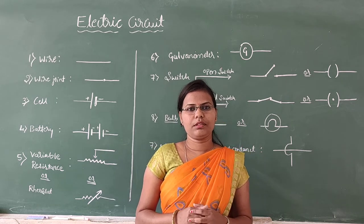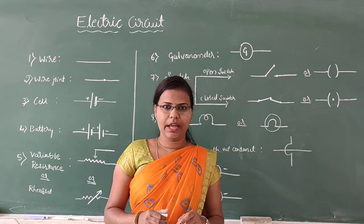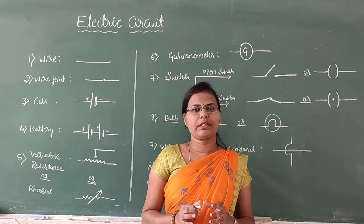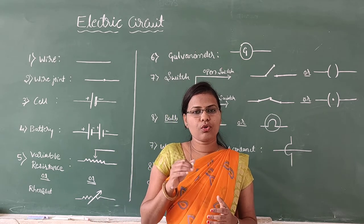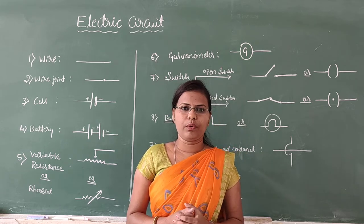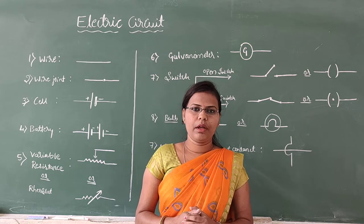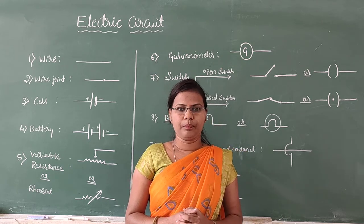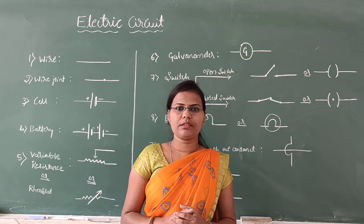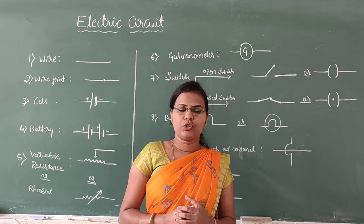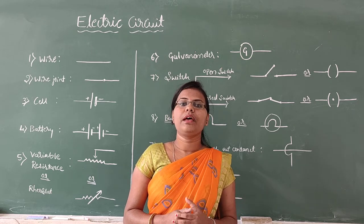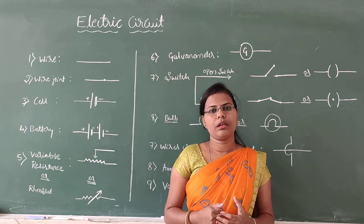An electric circuit is a path or a line through which an electric current flows. To draw an electric circuit by making actual sketches of electrical components is a very difficult job and takes a lot of time. Because of this reason, our scientists have devised some symbols to draw electric circuits. These symbols are called electric symbols or circuit symbols.